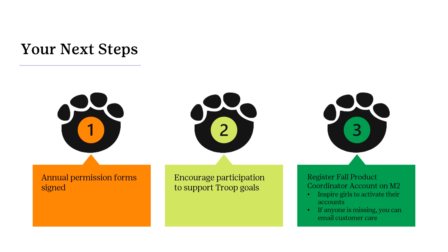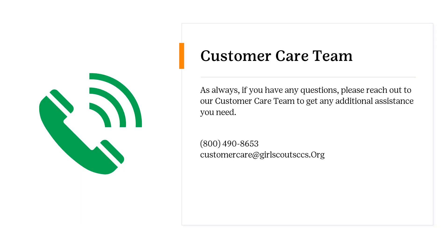Three: register fall product coordinators on their M2 account. You should receive your emails to get everything started and be ready to go. If there's any delay, please reach out to Customer Care. Inspire the girls to activate their accounts October 1st when they can. And if anyone is missing, you can email Customer Care to make sure that everybody gets what they need. As always, if you have any questions, please reach out to our Customer Care team for any additional assistance. Do not hesitate to call if you are needing any assistance or have any questions during this entire process.